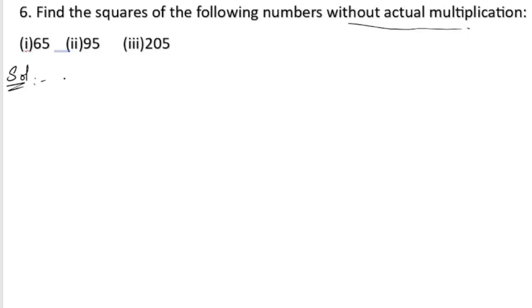Let us take the first one: 65 whole square. As we have already learned in our properties, we can see that we need to multiply 6 with 700.